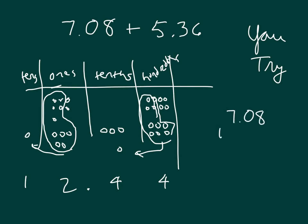Line them up numerically to add them. Hopefully you did that as well. 8 plus 6 is 14. 4, regroup a 1. 4 in the tenths place. And 7 and 5 is 12. 12.44 or 12 and 44 hundredths.